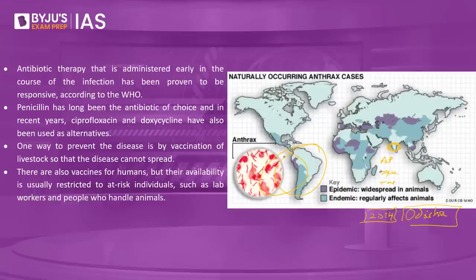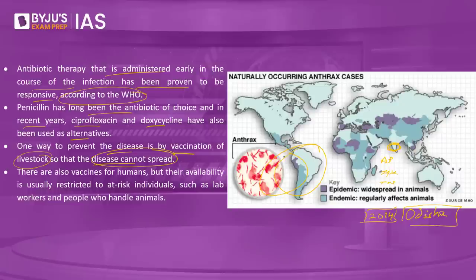How do we overcome anthrax? Antibiotic therapy administered early in the course of infection has been proven to be responsive according to the World Health Organization. Penicillin has long been the antibiotic of choice, and in recent years ciprofloxacin and doxycycline have also been used as alternatives. One way to prevent the disease is by vaccination of livestock. There are also vaccines for humans, but availability is usually restricted to at-risk individuals such as lab workers and people who handle animals.